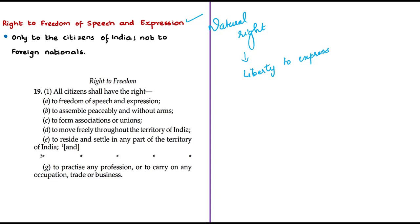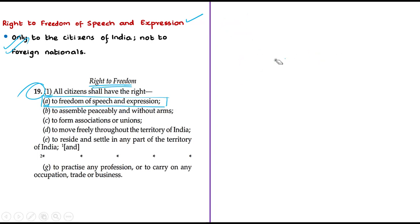Freedom of speech and expression is the essence of society and must be safeguarded, especially in a democracy. The right to free expression is not only the right of an individual but also of the community to hear and be informed. The Indian Constitution has listed this right as a fundamental right under Article 19. It is particularly mentioned in Article 19(1)(a), which guarantees that all citizens shall have the right to freedom of speech and expression. This right is available only to citizens of India and not to foreign nationals. It is guaranteed to individuals or associations against the action of the state, but is subject to reasonable restrictions under Article 19.